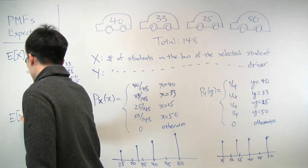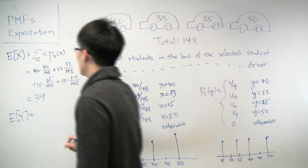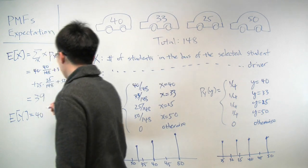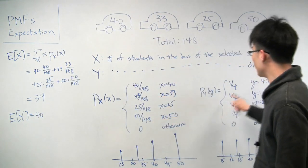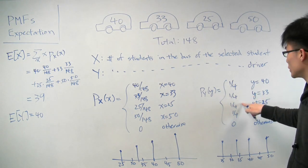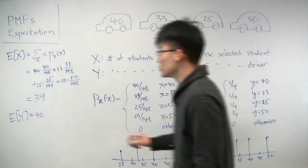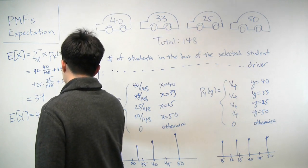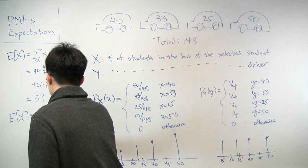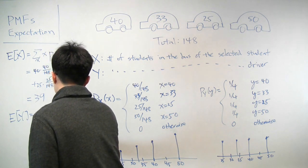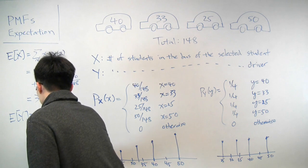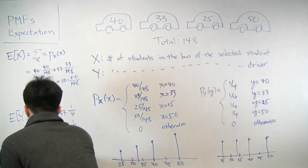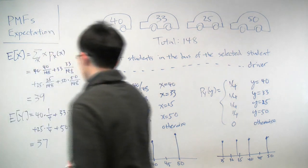And now we can do the same thing for y. But for y, it's different, because now instead of weighting it by these probabilities, we'll weight it by these probabilities. So each one has the same weight of 1/4. So now we get 40 times 1/4 plus 33 times 1/4 plus 25 times 1/4 plus 50 times 1/4. And if you do out this arithmetic, what you get is that this expectation is 37.